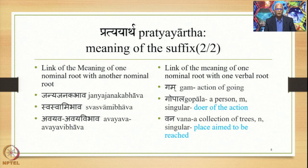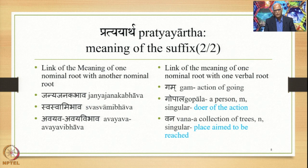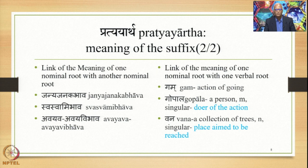Link of the meaning of one nominal root with another nominal root — here are the examples. Janya-Janaka-Bhava is such a meaning. Svaswami-Bhava is another example and Avayava-Avayavi-Bhava is the other example. Janya-Janaka-Bhava is the descendant and father relationship. Svaswami-Bhava is owner-owned, and Avayava-Avayavi-Bhava is the part and whole relationship.